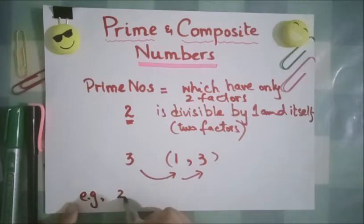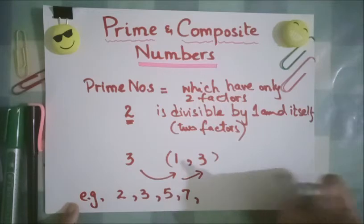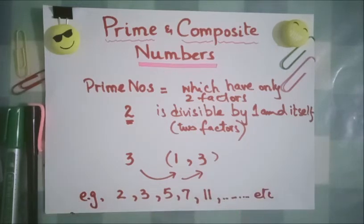already discussed 2, 3, then 5, then 7. Is it a 9? No, 9 is not a prime number because 9 is divisible by 1, 3, and 9, so it has more than two factors. So I am skipping that 9. 10, 11. Then I am writing 11 and then so on. These are the numbers which have only two factors, so these are called our prime numbers.